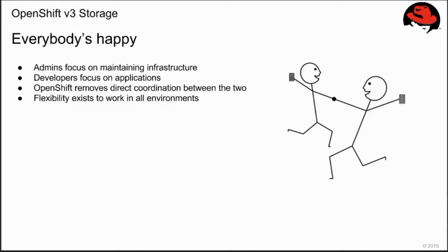That's how we're approaching storage in OpenShift: decoupling developers from the infrastructure, having admins provision storage in the cluster, using the API to discover and consume storage resources. OpenShift removes direct coordination between the two while remaining flexible enough to work with all types of storage. This represents the workflow — the actual user experience for both the administrative side and the application developer side. I hope it made sense. I'm available to take questions.